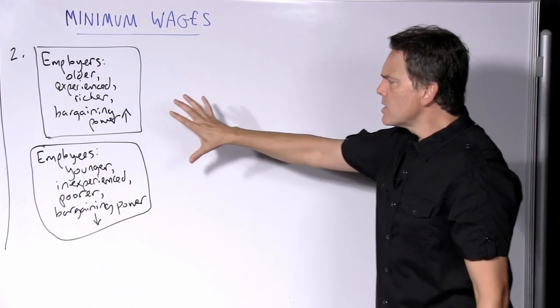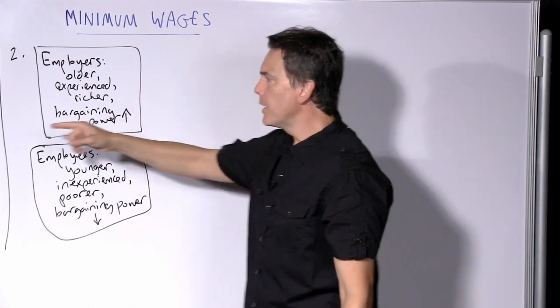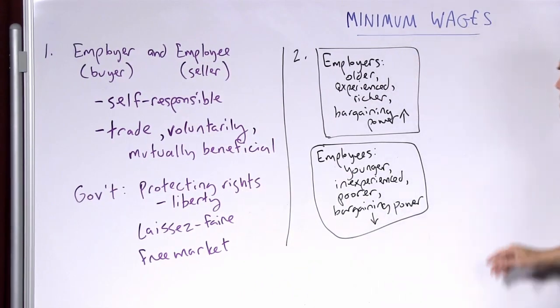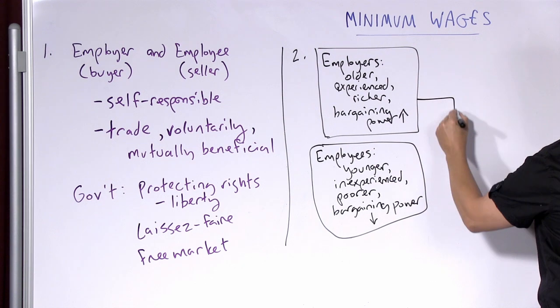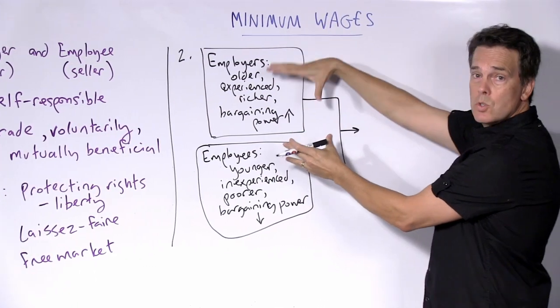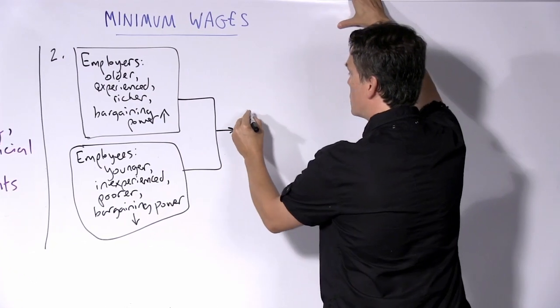So this side says that this is the right way to think about employers and employees, not a more abstracted individual self-responsibility position. What this side will then say is if we have a free market, that is to say, we just leave it up to these two parties to negotiate with each other to whatever terms they are willing to agree.